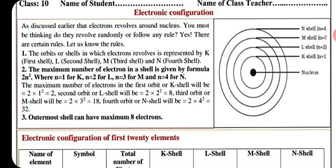Third M is 2 into 3 square, N की जगह 3 because M is 3rd shell, तो 3 into 3, 9 into 2, 18. Fourth orbit of N shell will be 2 into 4 square is equal to 32.